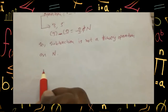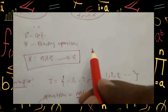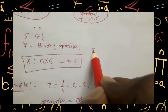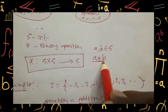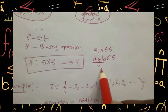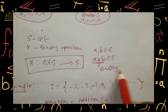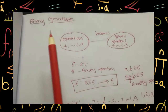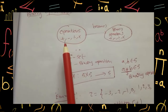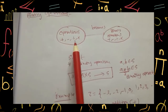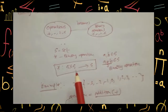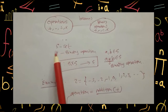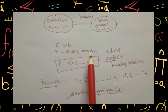Simply, the definition is: if you perform an operation on two elements of S — let a comma b belong to S — then if you perform a star b, the result element should also be in that set. Then that operation is called binary operation. So what we discussed is the definition of binary operation. The four basic arithmetic operations — addition, subtraction, multiplication, and division — become binary operations when they follow this condition.